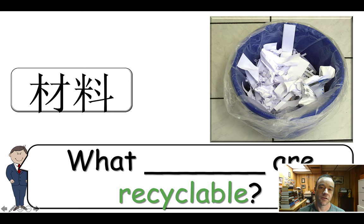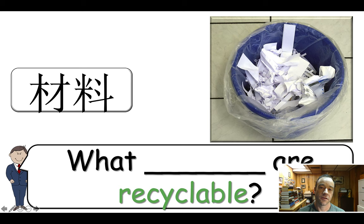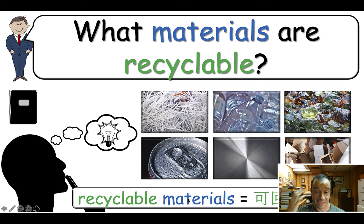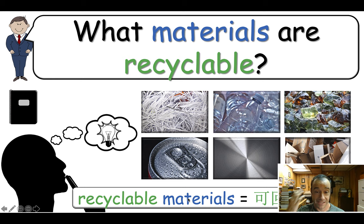Let's go on to teaching part two. In the next part of this lesson, they're going to talk about the materials that are recyclable. The first word they need to know is the word 'materials.' I like to see what they know and make them think, so I leave a blank. They see the word in their first language — which can be changed to any language — and see if they know it; they should write it down. Then present the question again: what materials are recyclable? There are pictures here to get them to brainstorm.